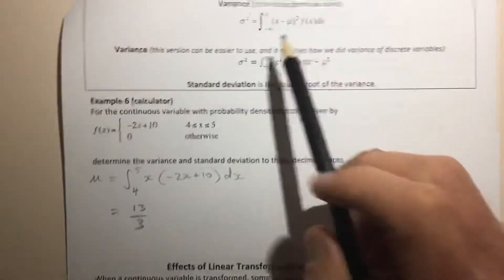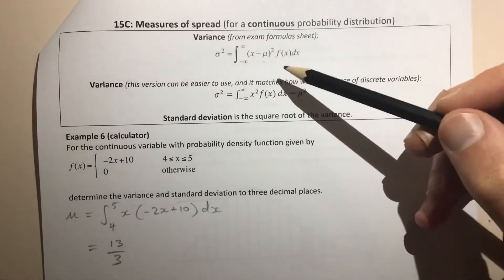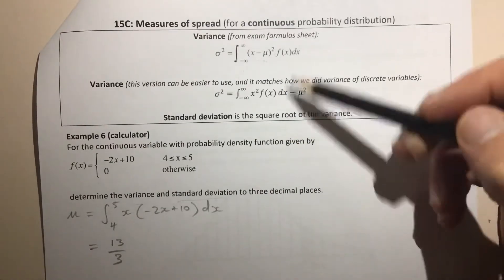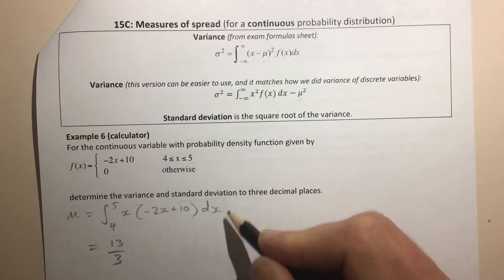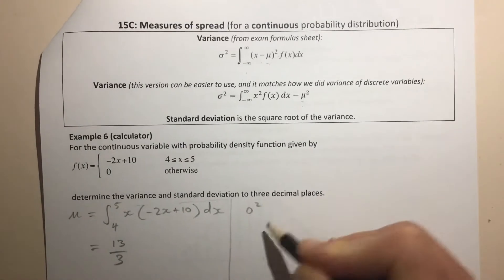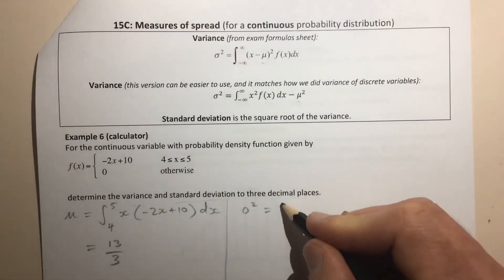Okay, now we can go to either one of these variance formulas, and like I said, it doesn't really matter which one you use. I can show you both on the calculator easily enough. The variance, σ², will be equal to the integral.